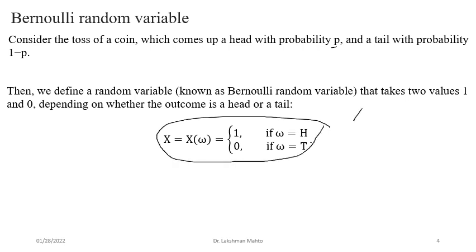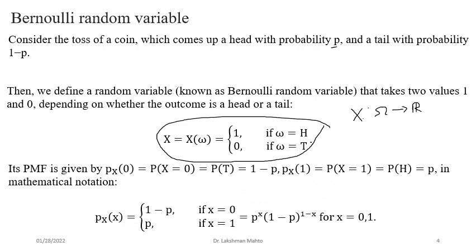This mapping is a function from the sample space of tossing a coin to R: when omega is head, X takes value 1; when omega is tail, X takes value 0. This is the mathematical definition of the Bernoulli random variable. Since it observes only two values, either 0 or 1, we now talk about the probability of each observed value — that is, the probability mass function.